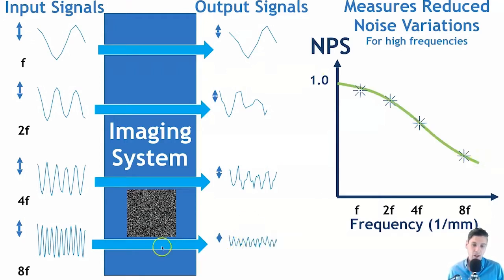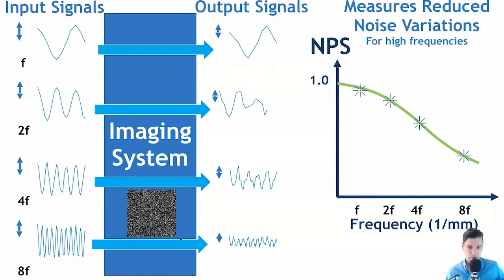In reality, we take noisy images from the medical imaging systems and use Fourier transforms at different overlapping regions to actually calculate the noise power spectrum. The high-level takeaway is that we are looking at variations as a function of spatial frequency.